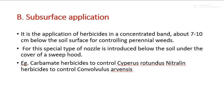Second is the subsurface application. It is the application of herbicide in a concentrated band about 7 to 10 cm below the soil surface for controlling perennial weeds. For this, special types of nozzles are introduced below the soil under the cover of a sweep hood. Example: carbamate herbicides to control Cyperus rotundus, and nitraline herbicide to control Convolvulus arvensis.